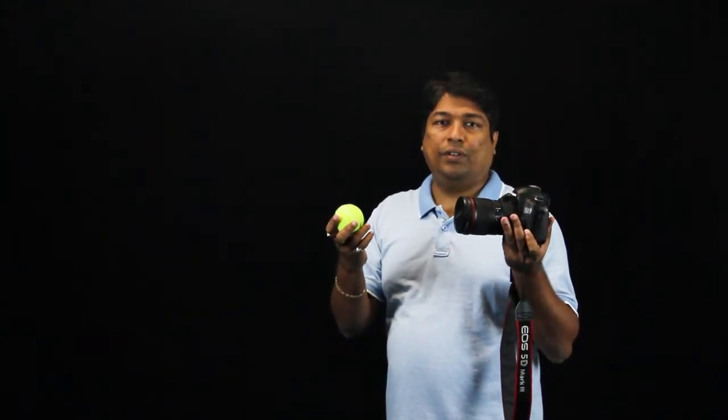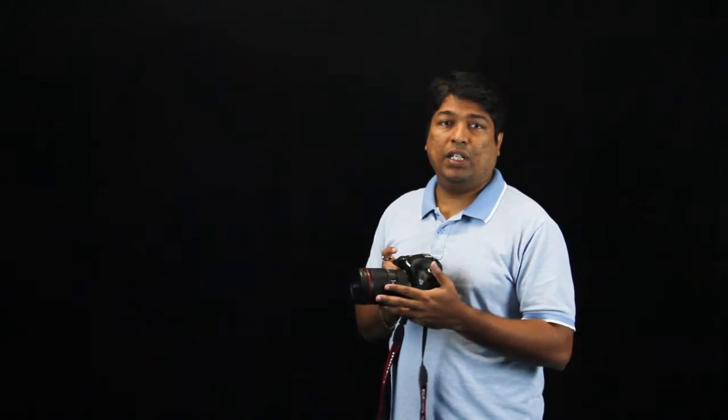First, have your shutter speed fast enough so that it can capture the photos fast enough. So how fast do you need? It's very simple: if you are using a lens with fixed focal length, let's say 50mm, then you just divide 1 by 50 - that's going to be your shutter speed.